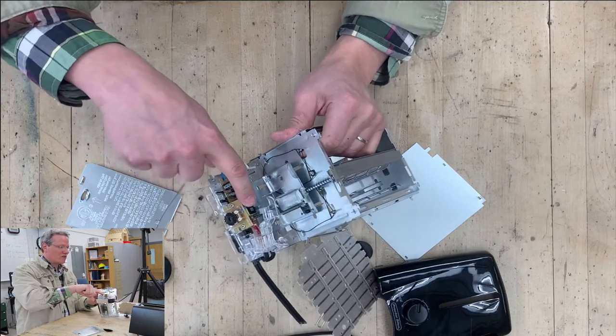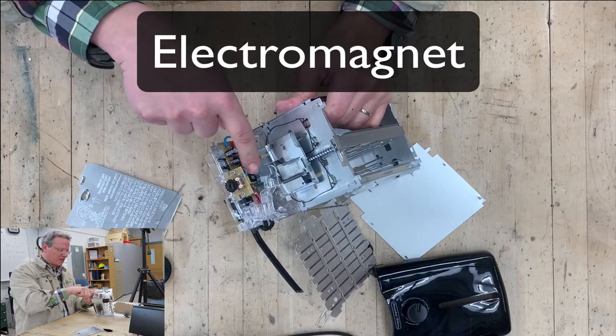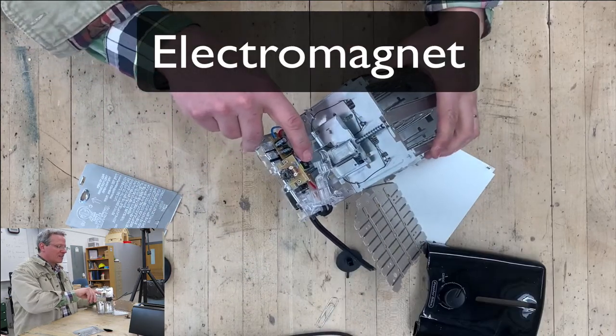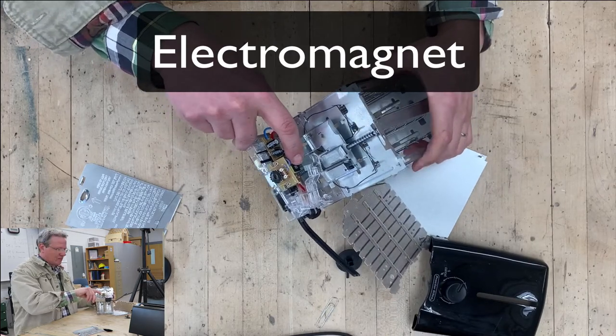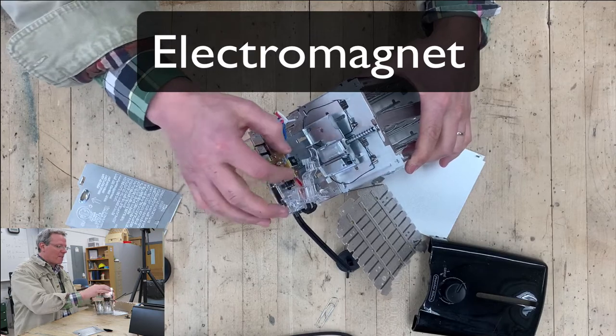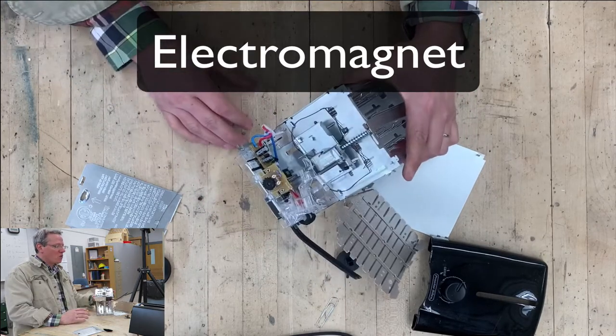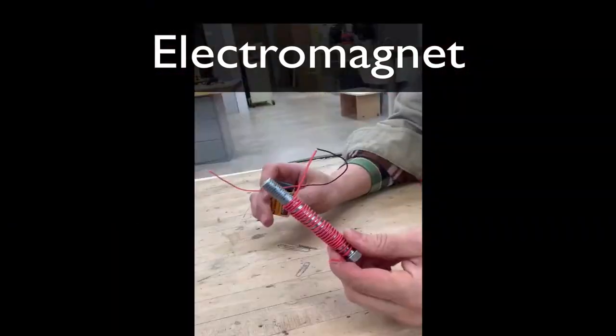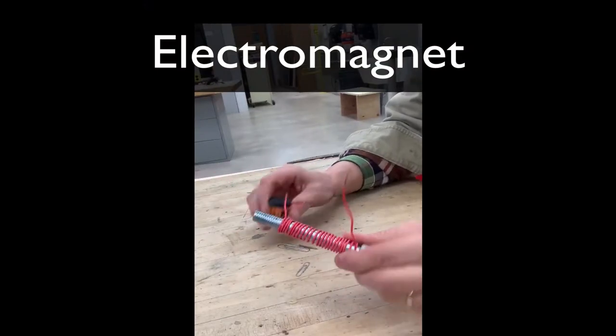Down here we have something called an electromagnet. This electromagnet is our electrical power system that converts electricity into a magnet that allows this spring to go up when the toast is done.